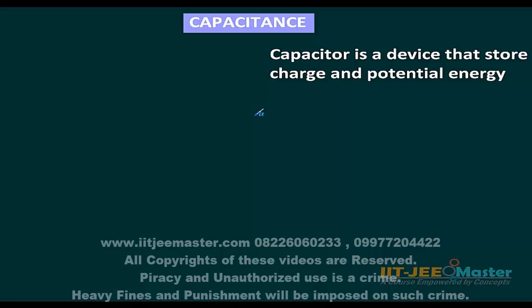We are starting capacitance, also known as electrostatics 2. A capacitor is a device that stores charge and potential energy. A device which stores the charge — and obviously potential energy will also be there because if charges are there, their potential energy is also there. Capacitance is the measurement of its capacity to store the charge.